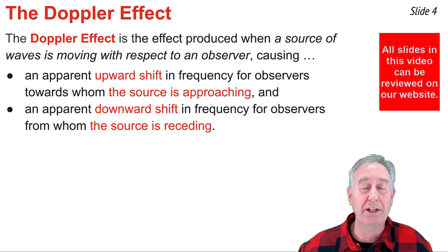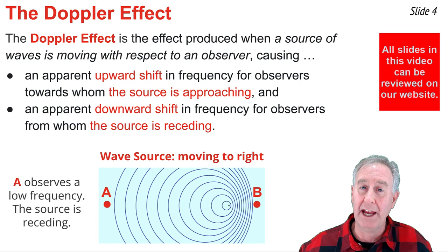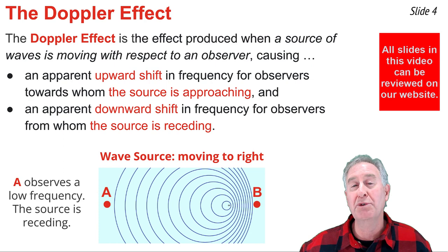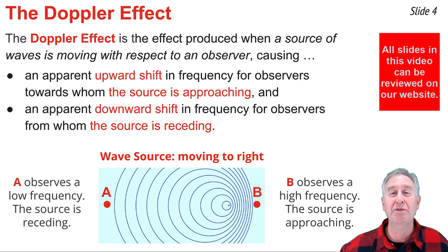In the case of the bug moving to the right as it disturbs the water at a periodic frequency, observers A and B would observe two different frequencies, and each frequency would be different than the frequency at which the bug actually creates the waves. Because the bug is moving away from observer A, observer A observes a frequency that is less than the frequency at which the waves are created. And because the bug is moving towards observer B, observer B observes a higher frequency.